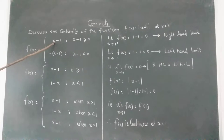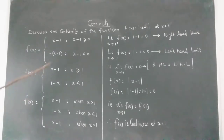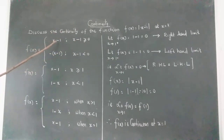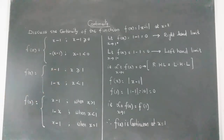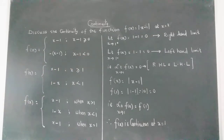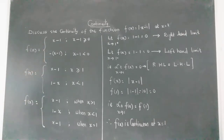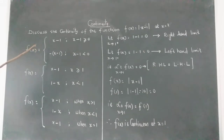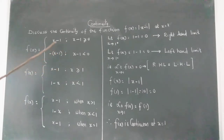We are going to split the modulus of x minus 1 like this: x minus 1. When x minus 1, the expression within the modulus, is more than or equal to zero — which means when this is a positive number — the value will be x minus 1 alone. Then when it is negative, which means x minus 1 is less than zero, we add an extra negative sign. This negative gives a positive sign, so positive of x minus 1 is just x minus 1. If it is a negative value, an extra negative is given.